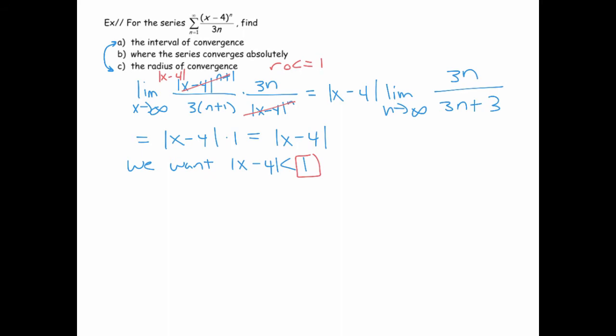Now let's get the interval of convergence. This implies that negative 1 is less than x minus 4, which is less than 1, which implies that 3 is less than x, which is less than 5. So we're almost done with the interval of convergence, except we have to check the endpoints.